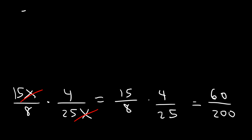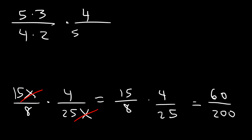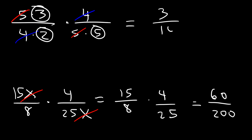We can write 15 as 5 times 3, 8 as 4 times 2, and 25 as 5 times 5. Notice that we can cancel a 5 and cancel a 4. So on top, all we have left is 3. On the bottom, 2 times 5 is 10. So the final answer is 3 divided by 10. Keep in mind, it's better to simplify first before you multiply fractions.